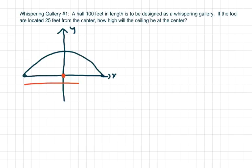The total length here is 100 feet, so each part is 50 feet. And the foci are located 25 feet from the center, so I know my a is 50 and my c is 25.